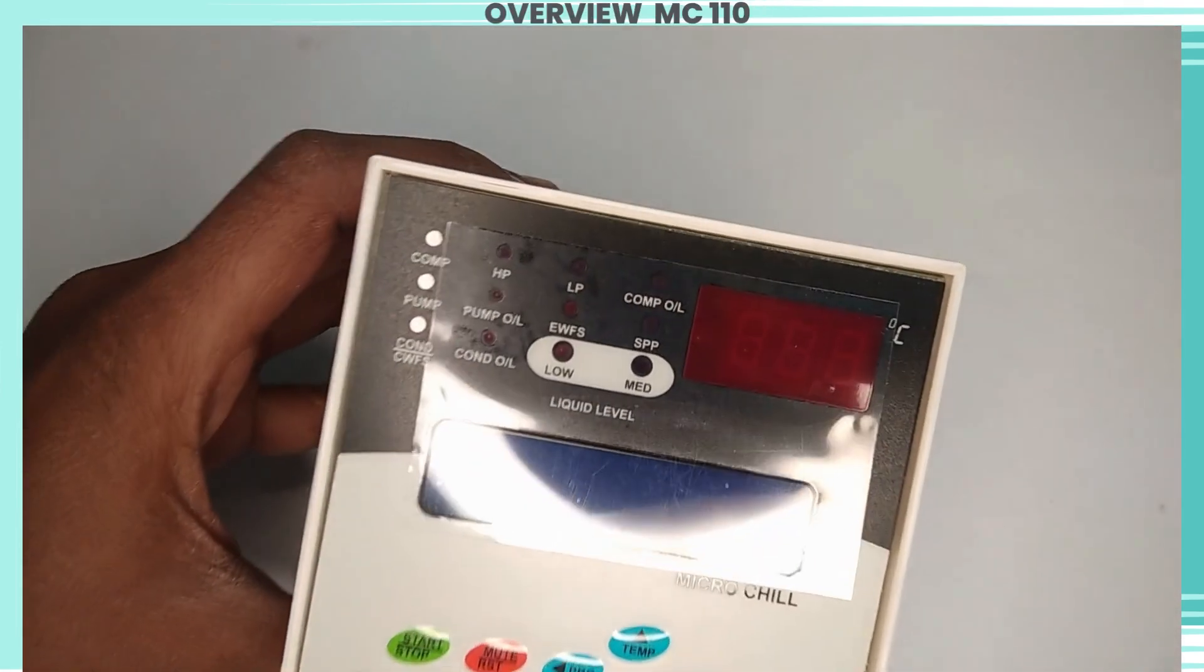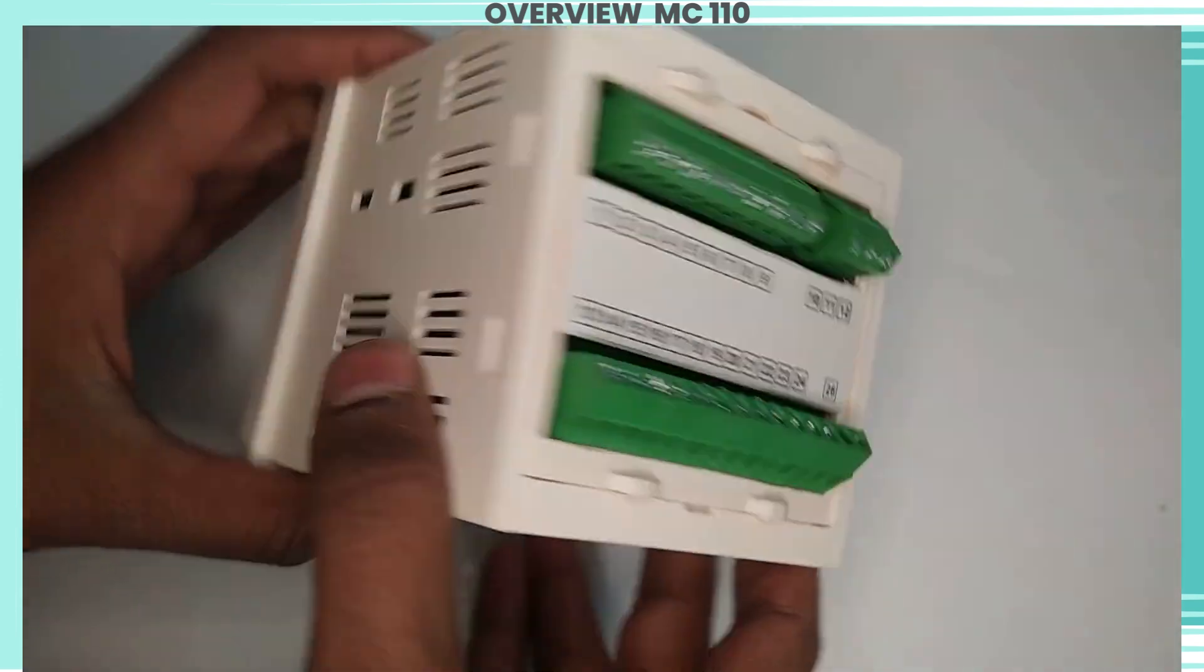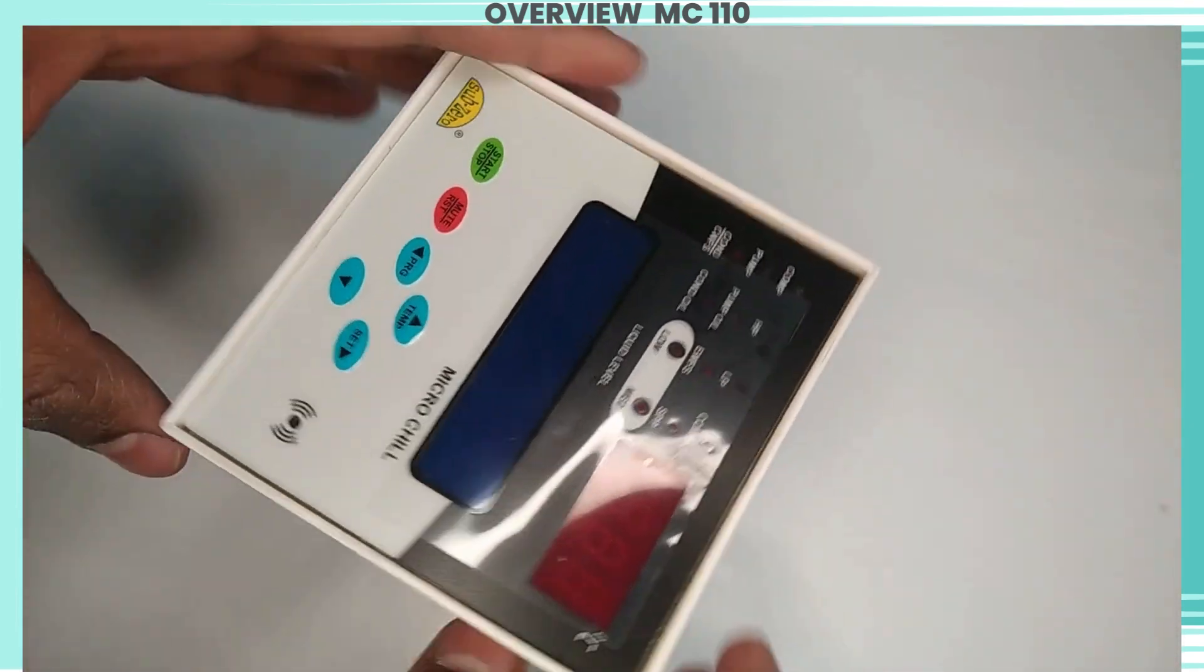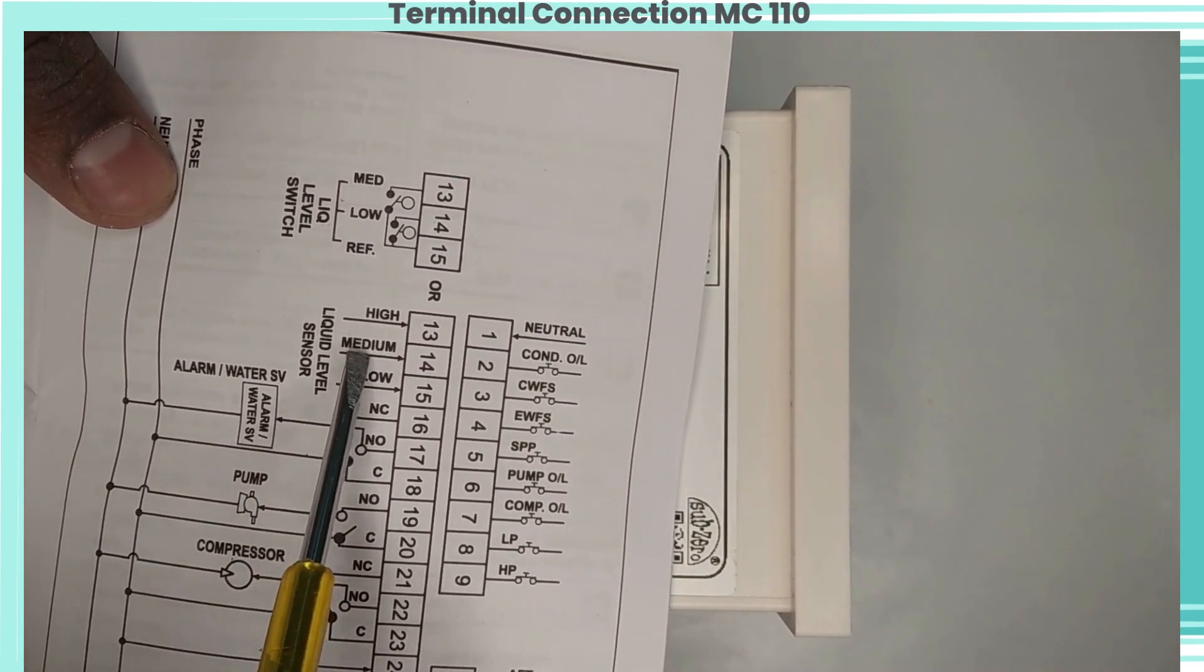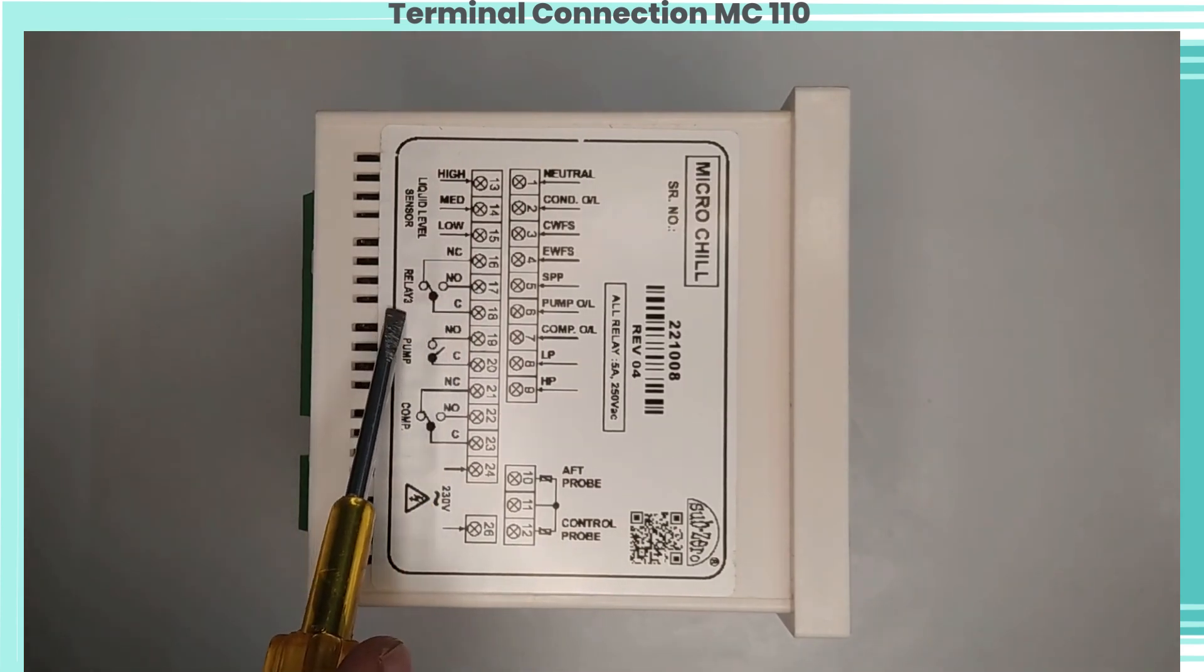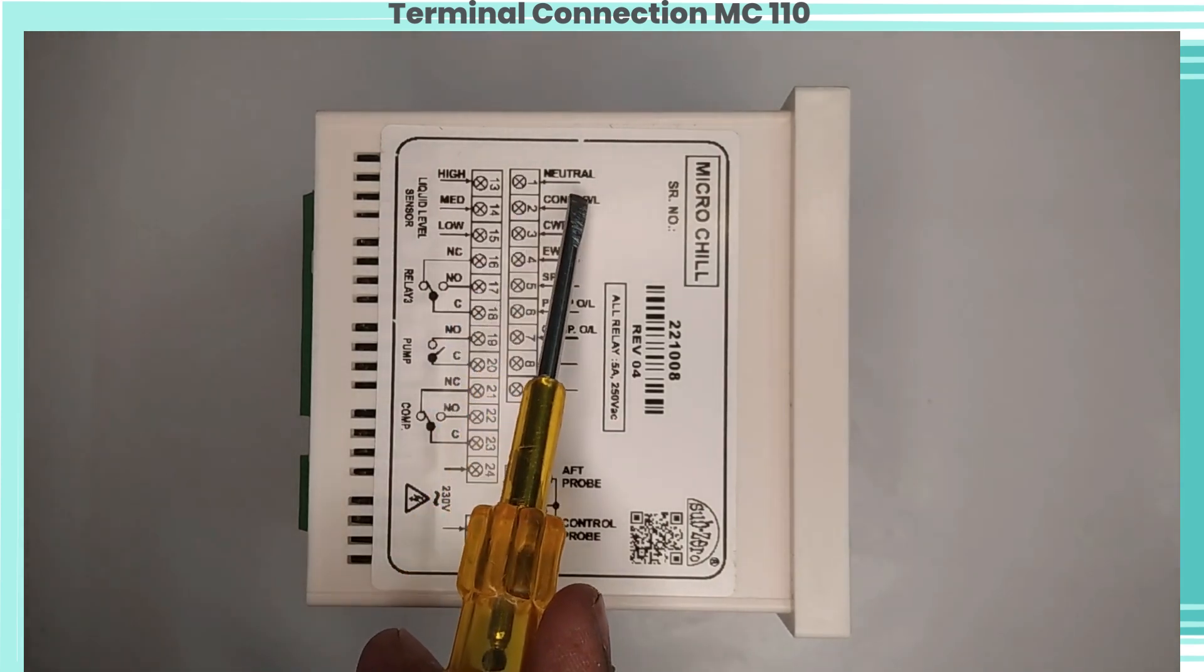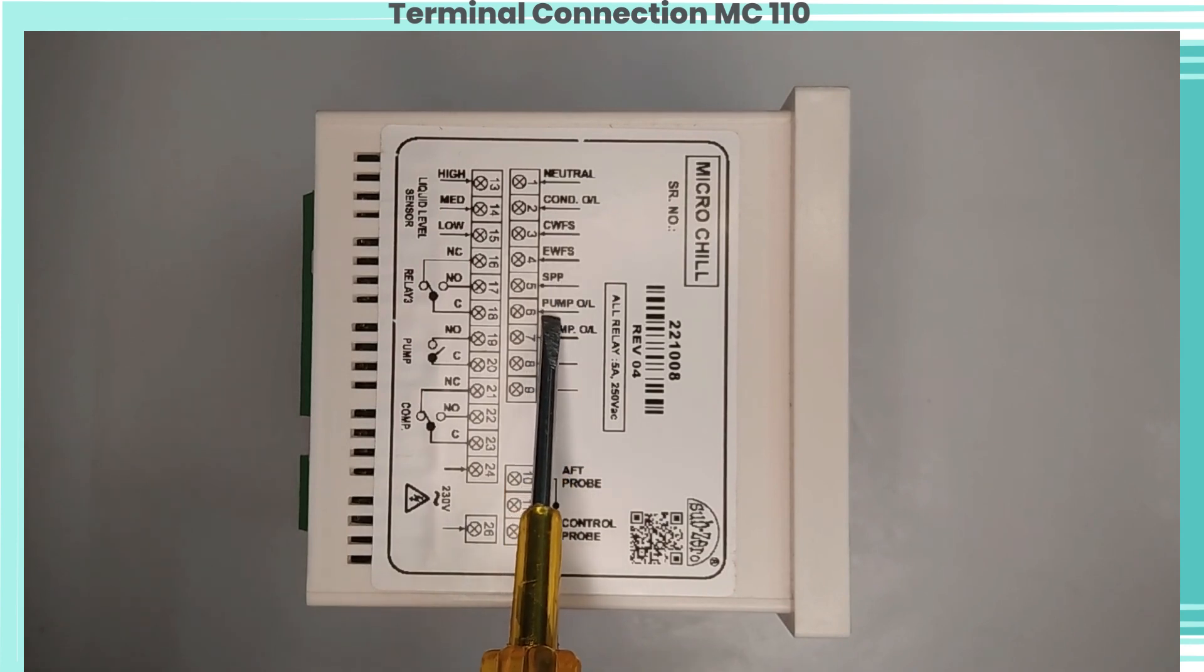Now let's see a 360-degree view of the Subzero controller. We can see all the terminal connection details are available on the sticker. For liquid level sensor, terminals 13, 14, and 15 connection is available. 16, 17, 18 connection is for one relay output. 19, 20 is NC output for pump. One compressor output is also available: HP, ALP, comp OL, pump OL, SPP, cond OL, EWFS, CWFS strip protection for compressor. Auto-manual reset for HP, ALP, and AFT. And last 10 fault history is also available.